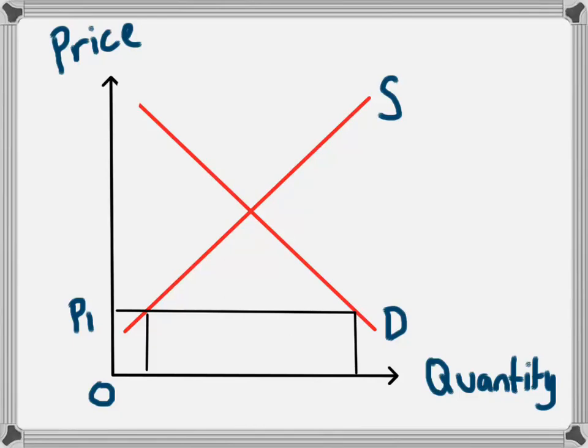This video uses a supply and demand diagram to explain how a tariff works. Tariffs are used by governments to protect their domestic industries. A tariff is basically a tax on imported goods that effectively increases the price of any imported goods, which allows domestic producers to be more competitive.